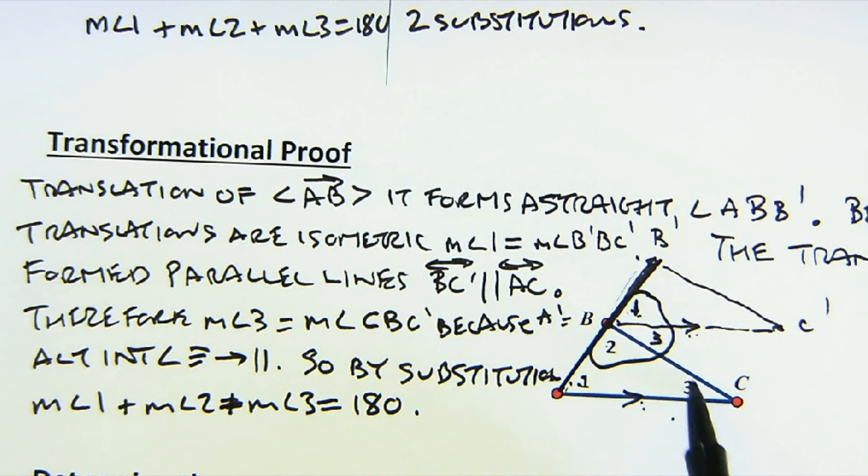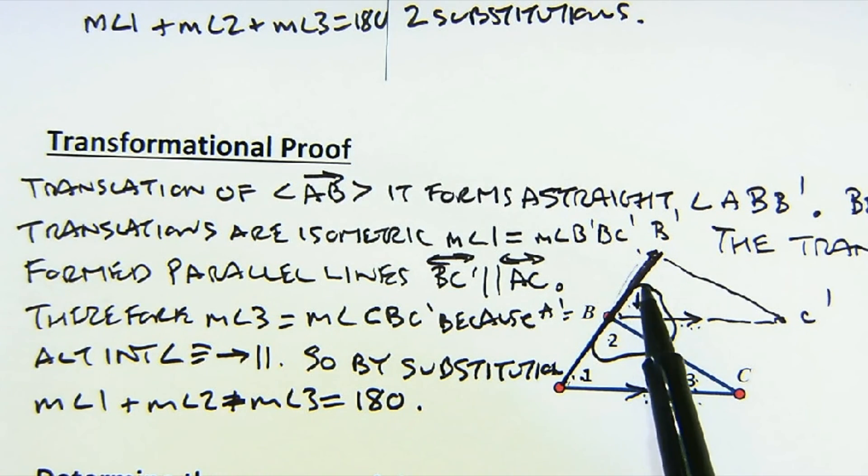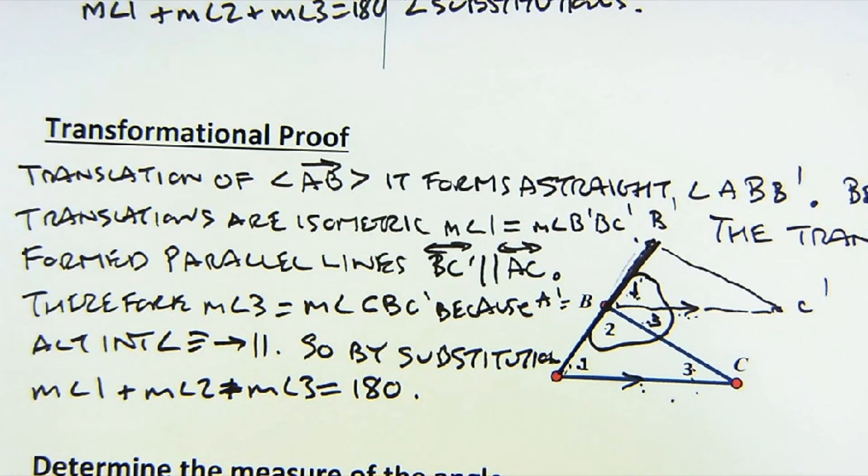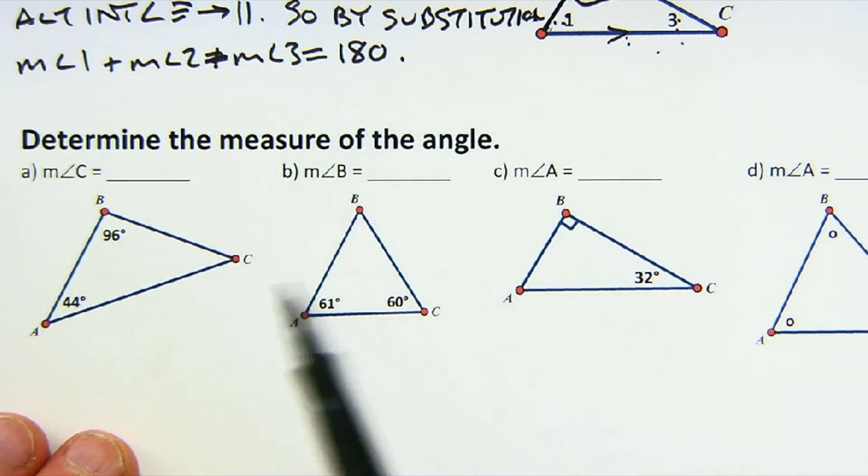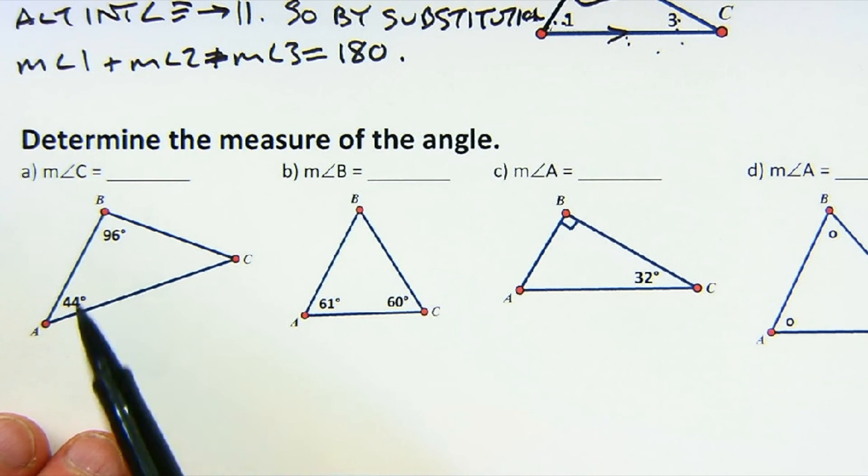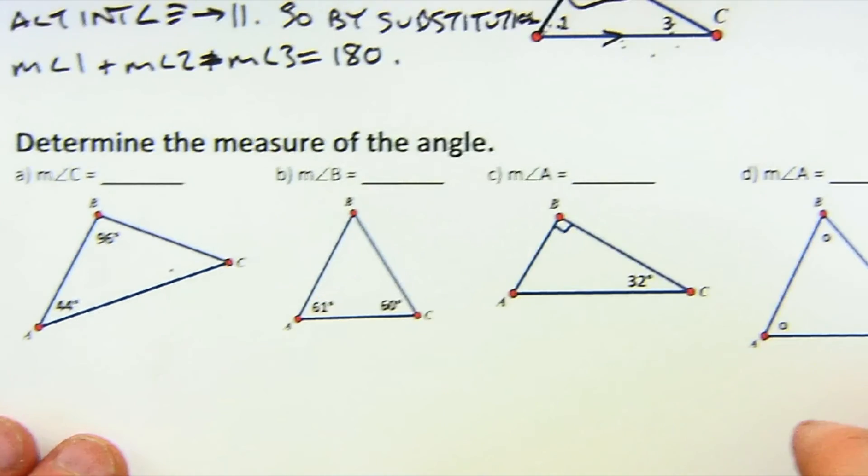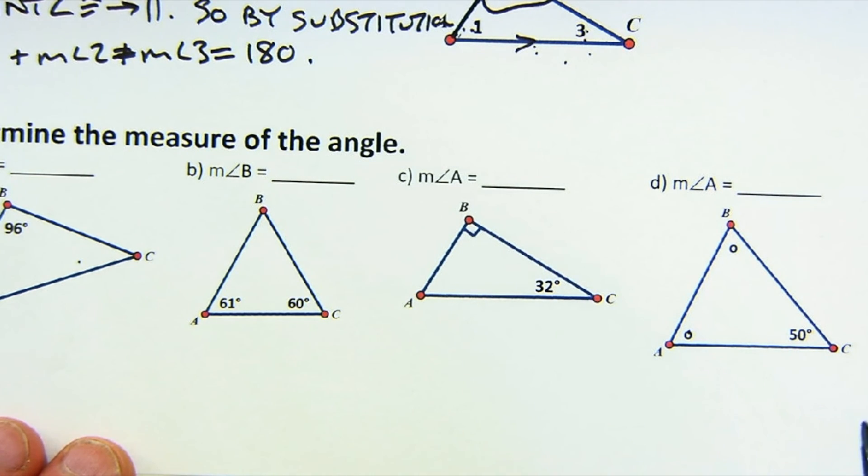And that allowed me to say alternate interior angles had to be equal here because the parallel lines, and then one, two, and three add up to 180. So a nice little real-time proof using translations. And here now you can just see how basic this becomes. If they give you two angles, you just subtract them from 180 to find the missing angle and so on. Here you would subtract 50 from 180 and divide it by two because there are two angles like that.